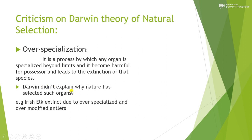Darwin didn't explain why nature selected such organs. During evolutionary history, there are many species in which a particular organ becomes so well-developed — over-developed — that it becomes harmful for the possessor, ultimately causing the extinction of that species. Extinction means the entire species is wiped out from the world.